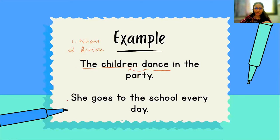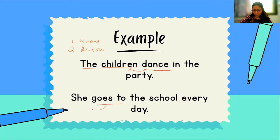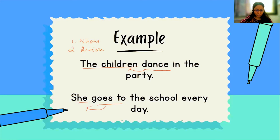Let's go to the next example: 'She goes to school every day.' Again, whom are we talking about in this sentence? And who is performing the action — the action of going to school? Who is the main subject? It's 'she.' So that's your personal pronoun, or your subject pronoun. You are going to use these two tips to recognize the personal pronoun in a sentence.